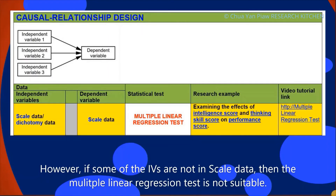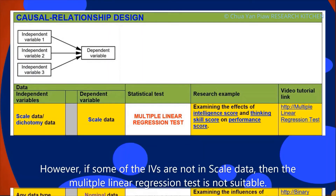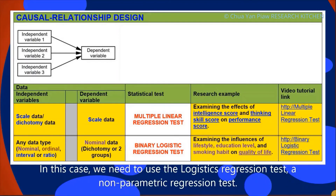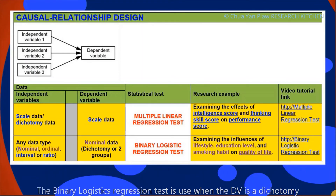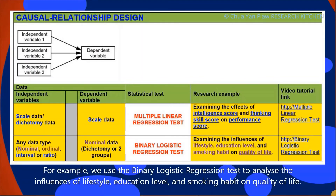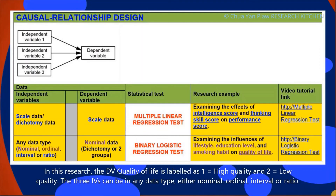However, if some of the IVs are not in scale data, then the multiple linear regression test is not suitable. In this case, we need to use the logistic regression test, a non-parametric regression test. The binary logistic regression test is used when the DV is a dichotomous nominal variable with two categories, and the IVs are in any data type. For example, we use the binary logistic regression test to analyze the influence of lifestyle, education level, and smoking habit on quality of life, where quality of life is labeled as 1 equal to high quality and 2 equal to low quality, and the three IVs can be in any data type — nominal, ordinal, interval, or ratio scale.